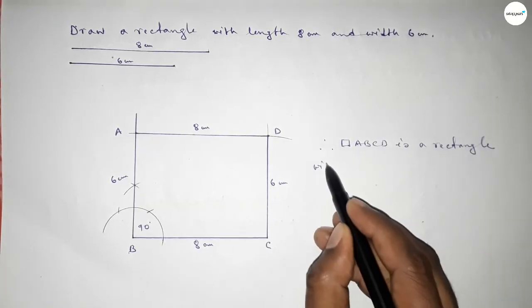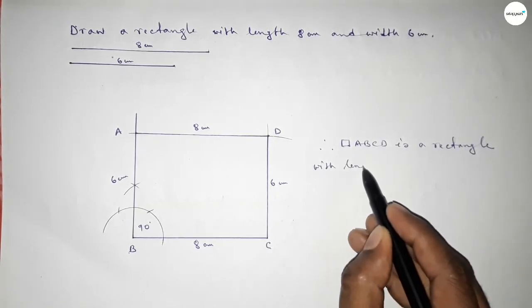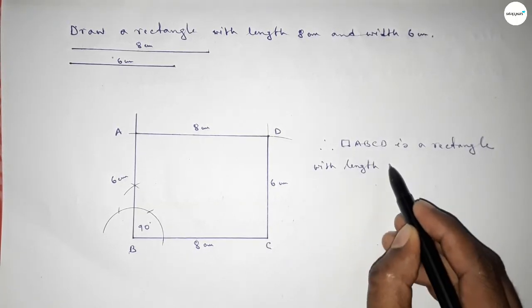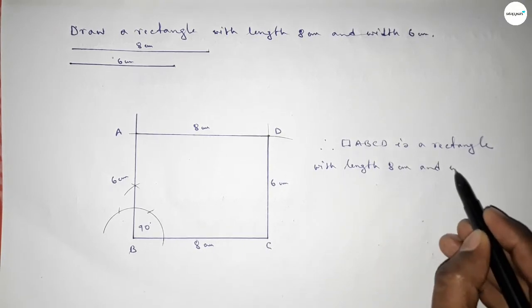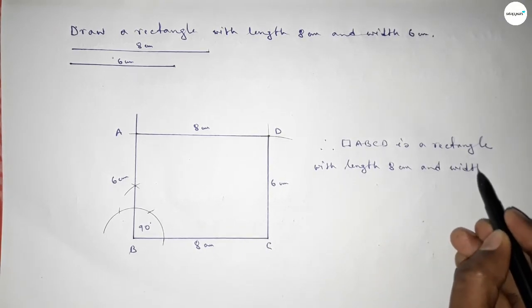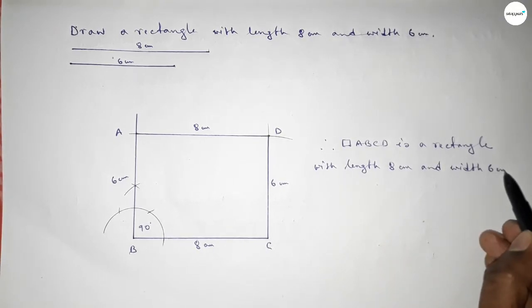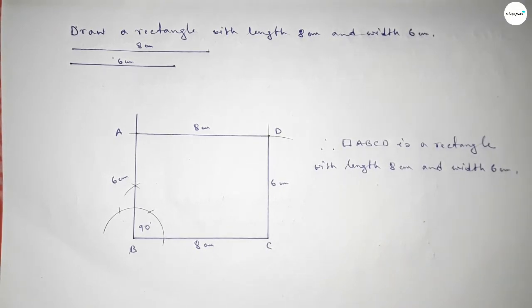Rectangle ABCD is a rectangle with length 8 centimeters and breadth or width 6 centimeters. That's all. Thanks for watching — if this video is helpful to you, please share it with your friends. Thanks for watching.